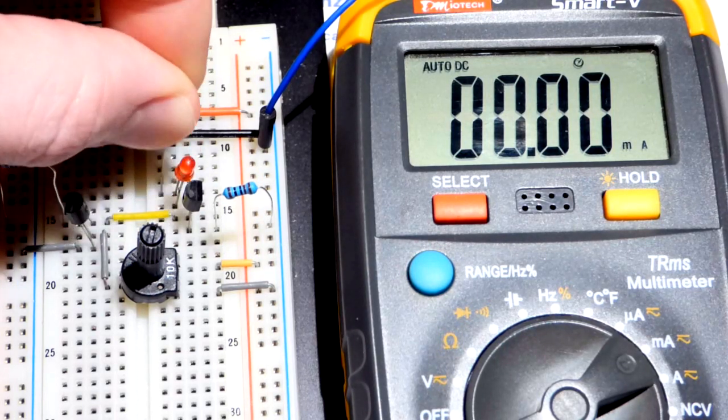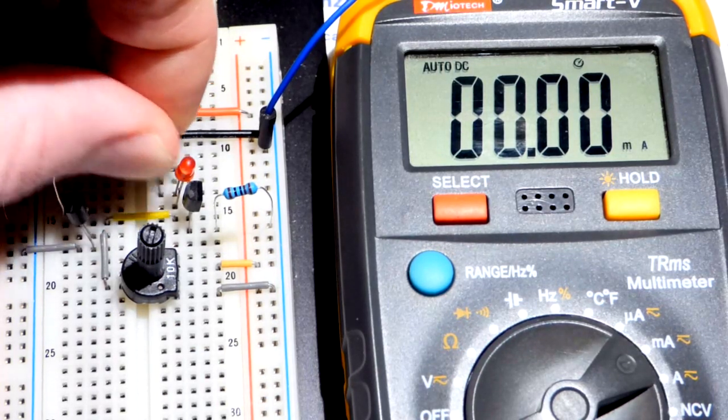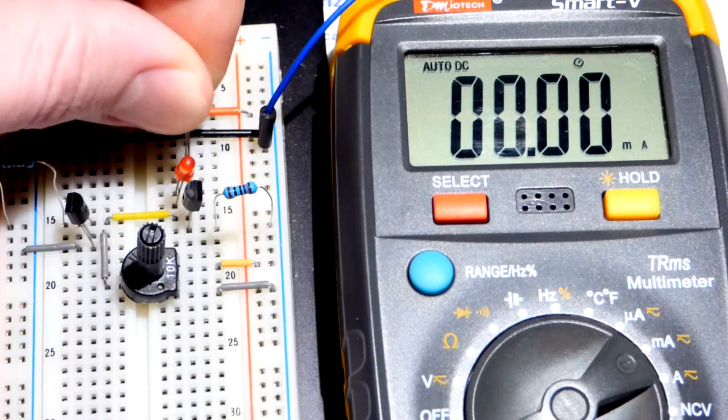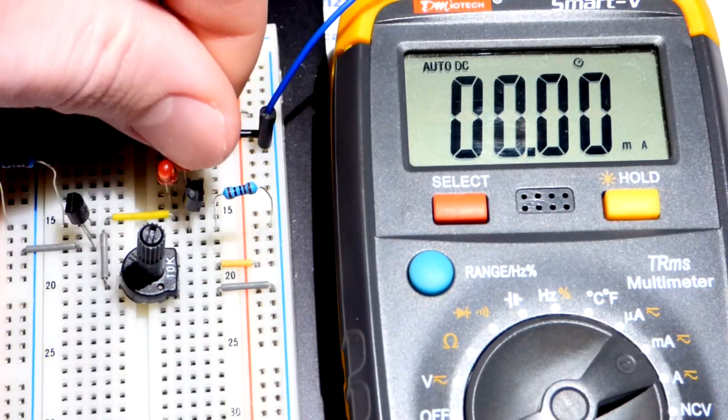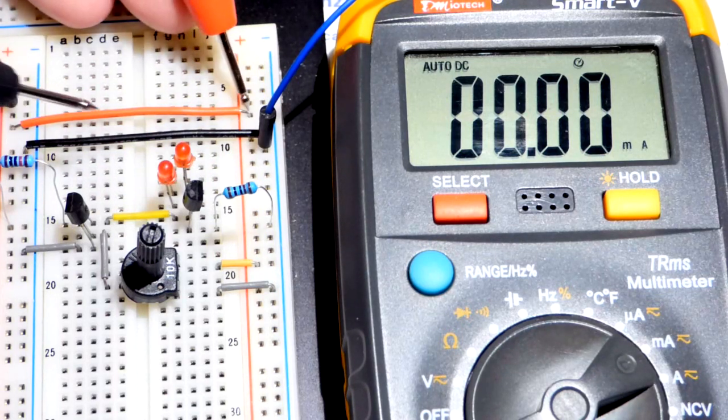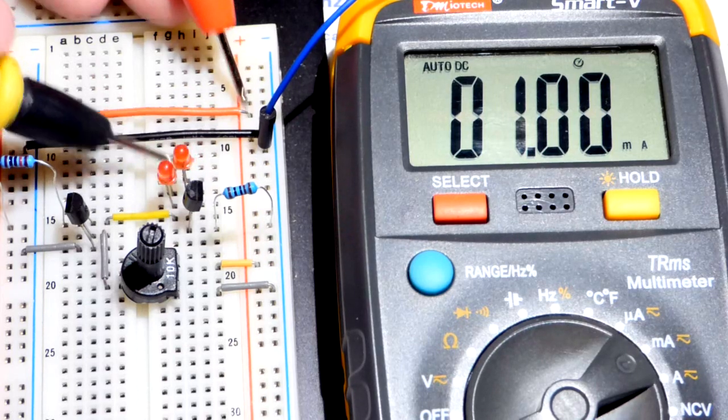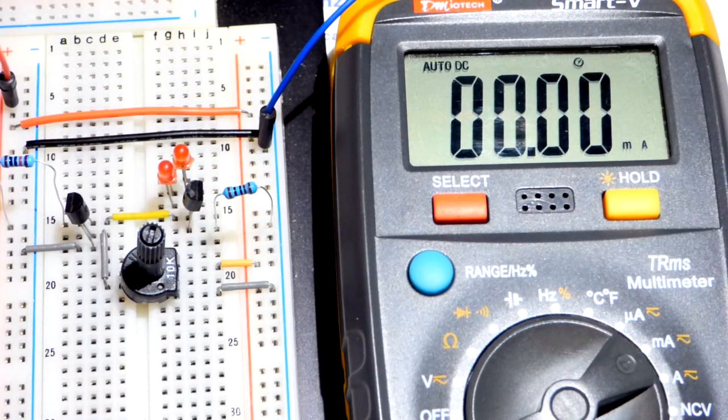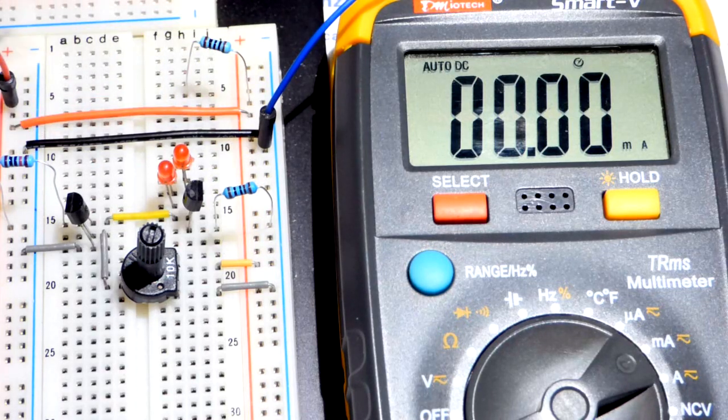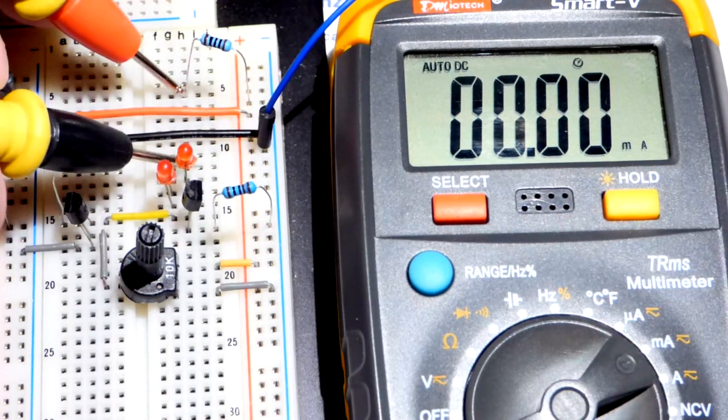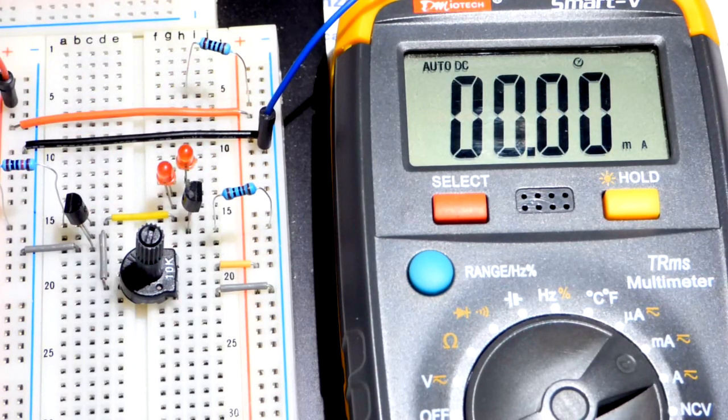Now I'm going to add an LED, so the LED will be in series with the transistor there. Again, one milliamp and it's spot-on, which is really nice. The LED is not very bright because it's only one milliamp of current. We will add another LED in series and again, one milliamp. We will even add a resistor and one milliamp of current.